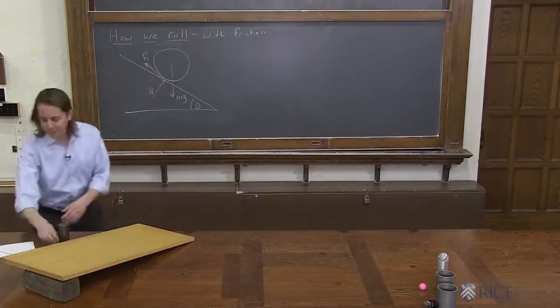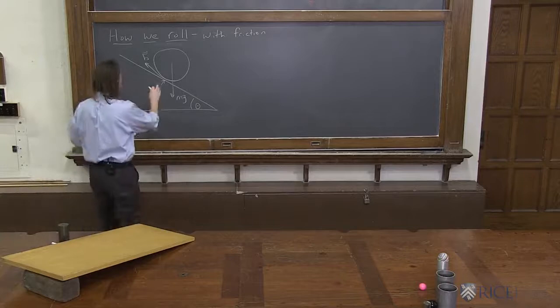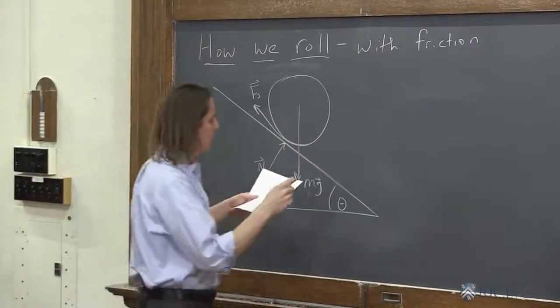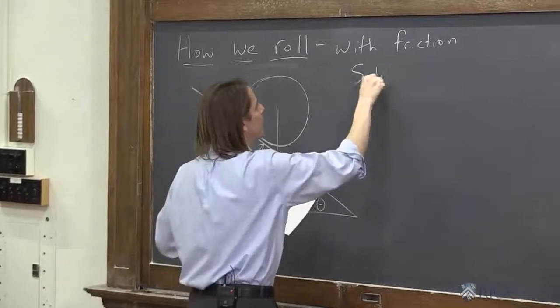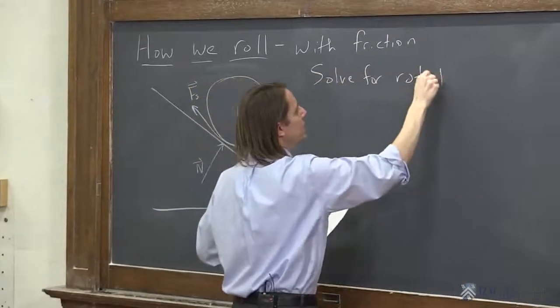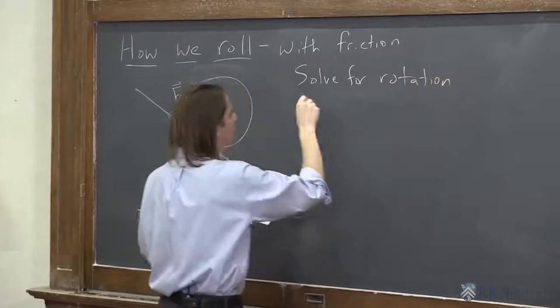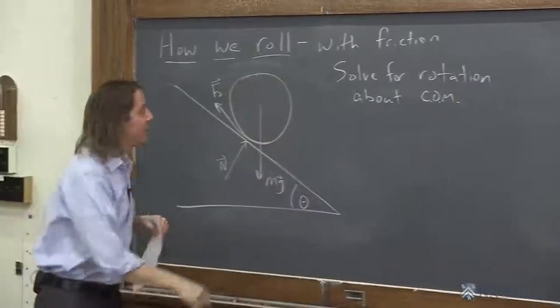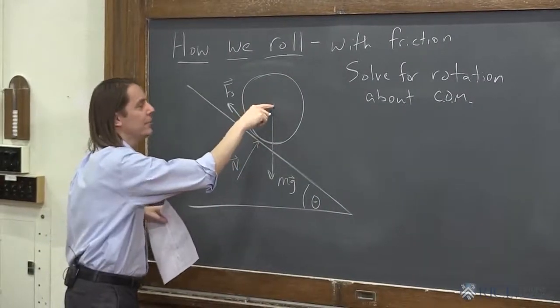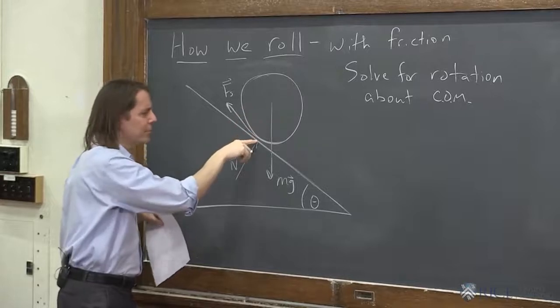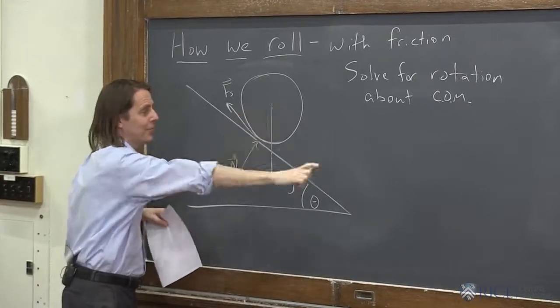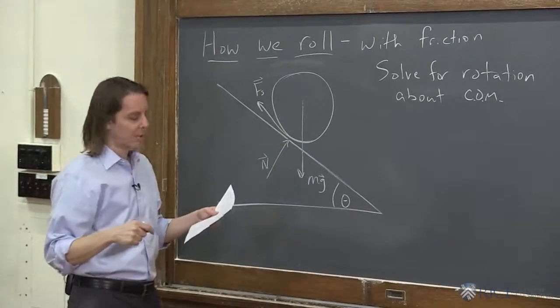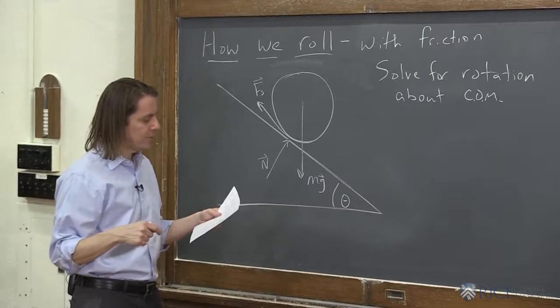Okay so what's going to be different then here is to include the friction force we have to rotate about a different axis so that it actually creates a torque. So what we're going to do is we're going to solve for rotation about the center of mass. So instead of saying it's rotating here we're going to think it's rotating around the center of mass. And you may say but it's really rotating here but it's also really rotating here. And we'll solve for the translational part with our standard sort of translation from rotation to translation for rolling.